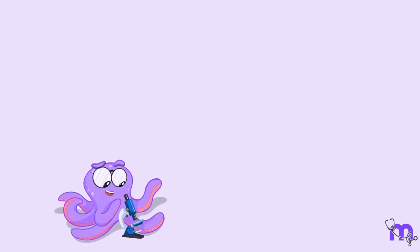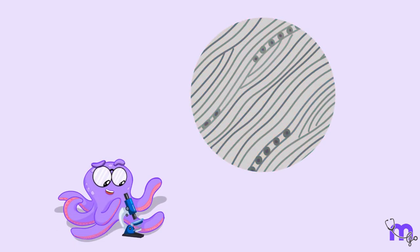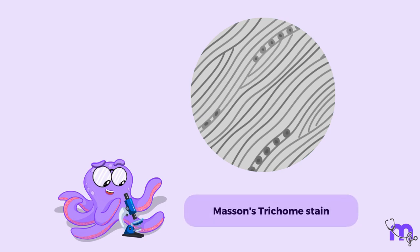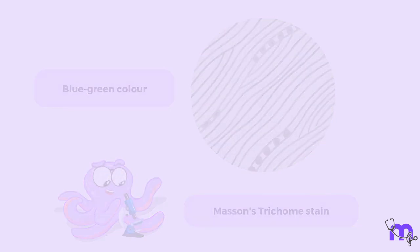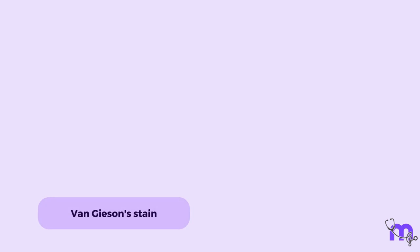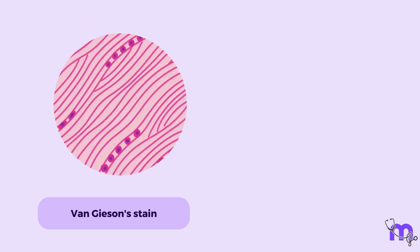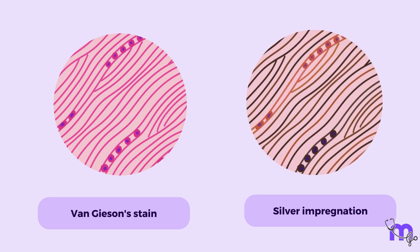Under the microscope, collagen fibers can be visualized using various staining techniques. For example, Masson's trichrome stain can selectively stain collagen fibers blue-green, making them easily visible under a microscope. Other staining techniques include the Van Gieson method, which stains them pink, and the silver impregnation method, which stains them brown.